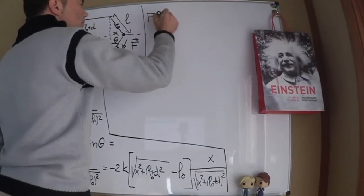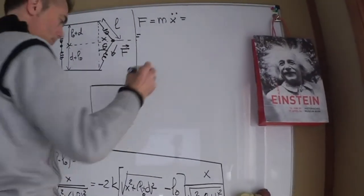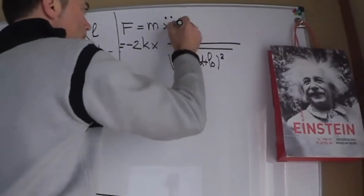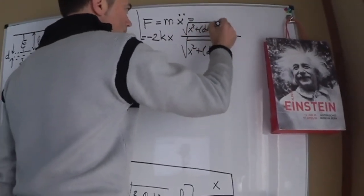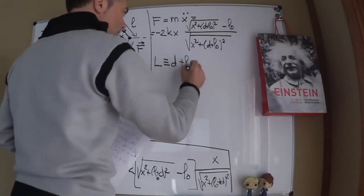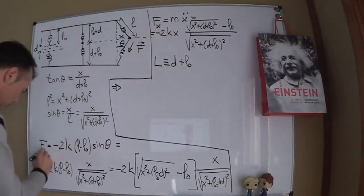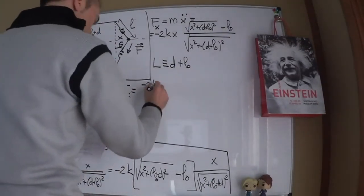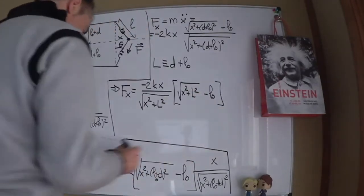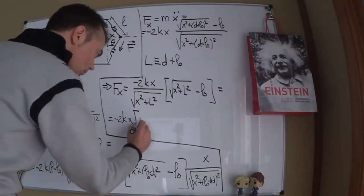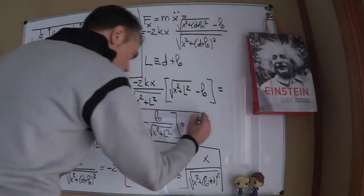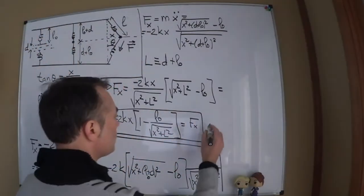So we have the mass which is oscillating along the x-axis, which follows Newton's second law: Fx equals m times x double-dot. Now let me call d plus L0 as capital L so I can simplify the expression a bit. We rearrange by dividing by this square root, so F sub x is minus 2kx times this term here.